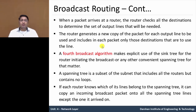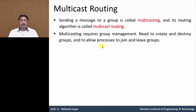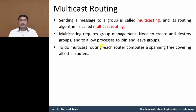Now let us discuss multicast routing. Multicast routing means sending a message to a particular group instead of all nodes. This is known as multicasting, and its routing algorithm is called multicast routing. Multicast routing requires group management, because we need to send a message to a group — we need to create and destroy groups, and allow processes to join and leave groups of nodes. To do multicast routing, each router computes a spanning tree covering all other routers.